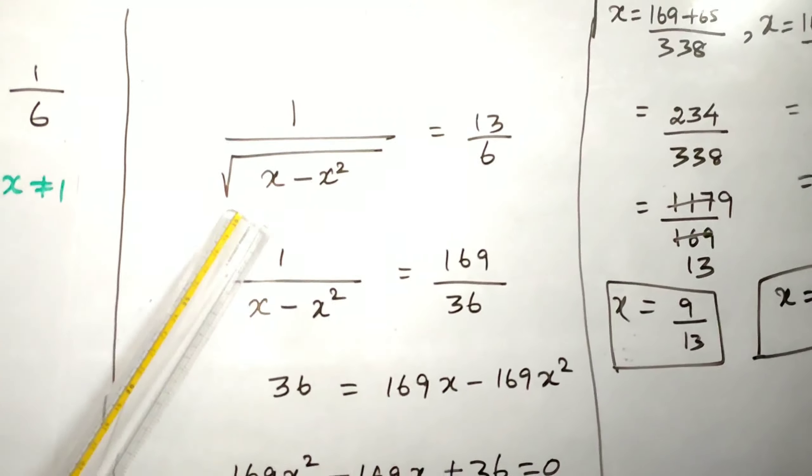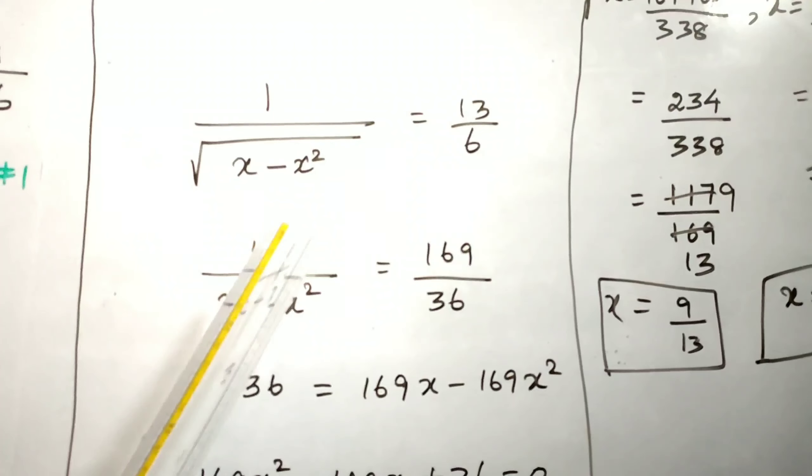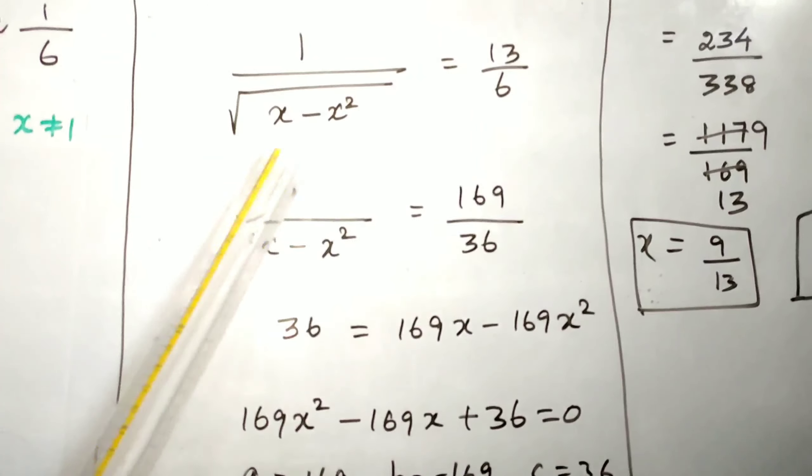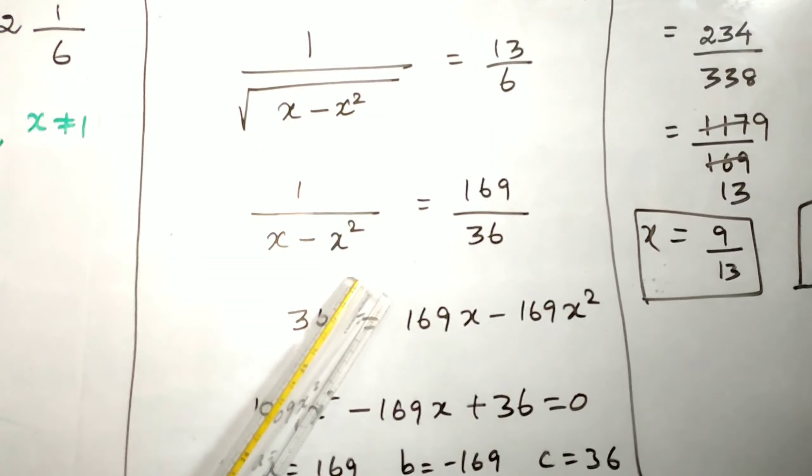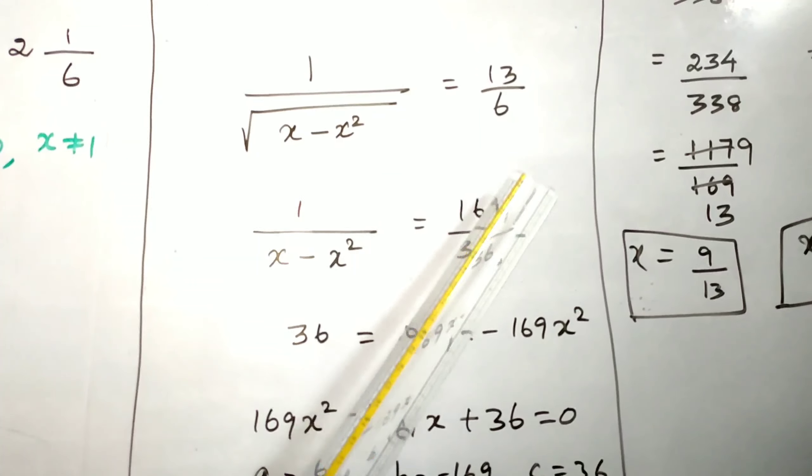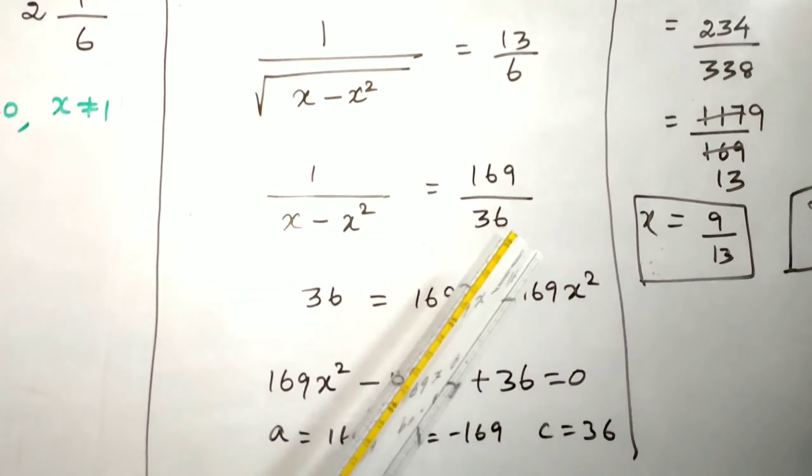We have to take out this root, so square both sides. 1 squared is 1. If you square it, the square and root get cancelled. This equals 13 squared, 169, by 6 squared, 36.